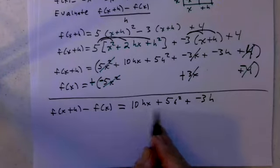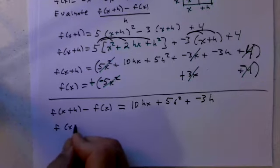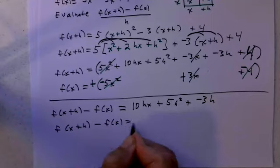Now you'll notice I have an h here, an h here, and an h here. Let's go ahead and factor that out. f(x+h) minus f(x), factoring out the h.